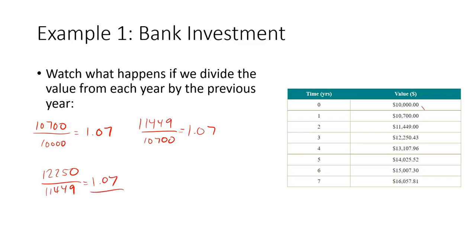And so if we multiply by 1.07, we'll get the next line, and so on. So we're multiplying by 1.07 each time. So this is exponential growth.